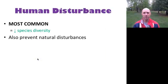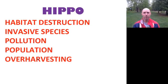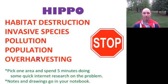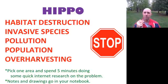With human disturbances, there's almost always a decrease in species diversity. Five examples of human disturbances can be summarized with the acronym HIPPO: Habitat destruction, Invasive species, Pollution, Population, and Over-harvesting. Let's stop right now, pick one of those, and spend about five minutes on the internet doing some research. Throw some info and drawings about your chosen human disturbance into your notebook.